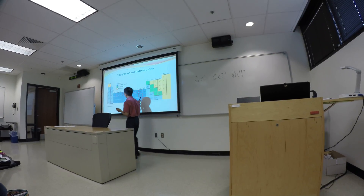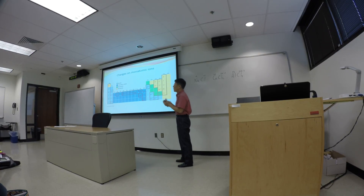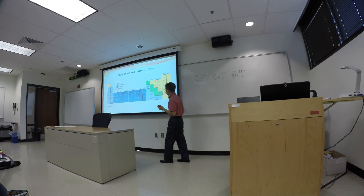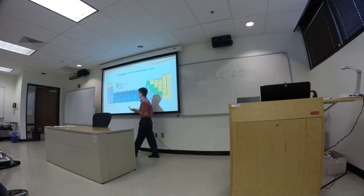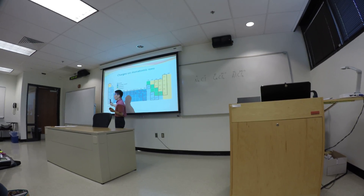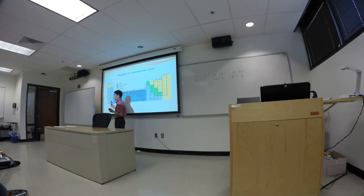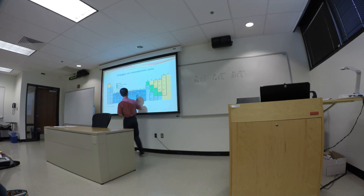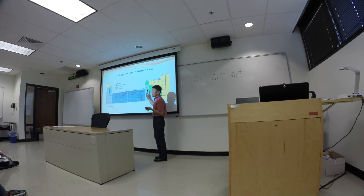Talking about the charges for monatomic ions — this particular picture shows the charges that each of the elements can bear. Group 1A: one positive charge. Group 2A: two positive charge. That's a correlation. Group 3A — aluminum belongs to group 3A — three positive charge.